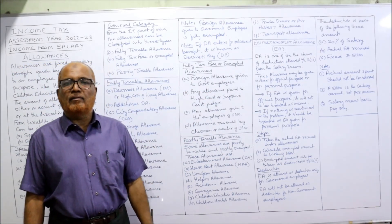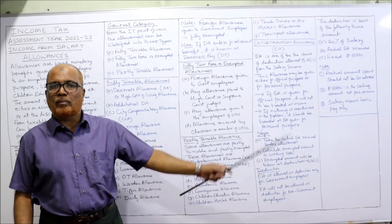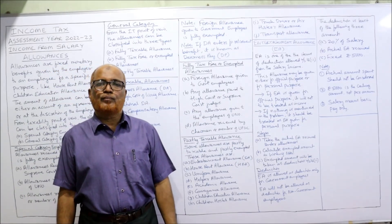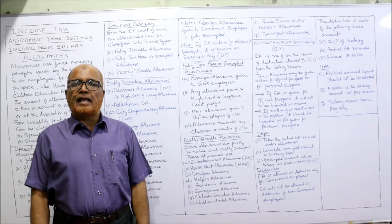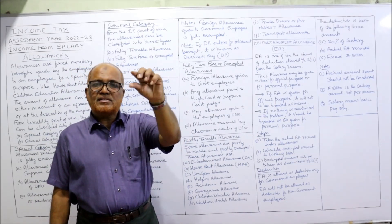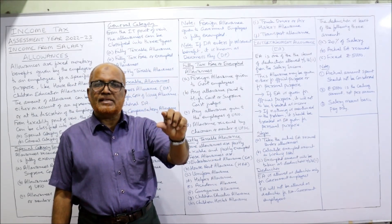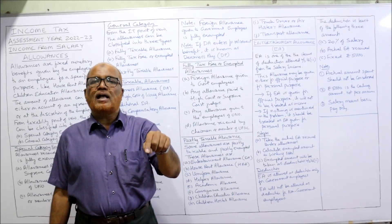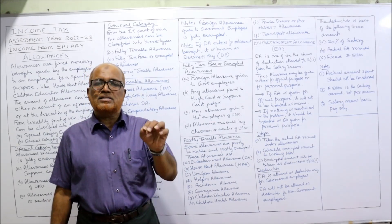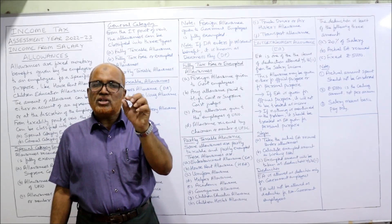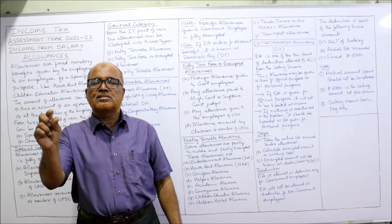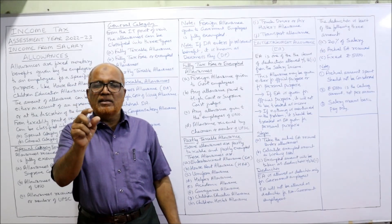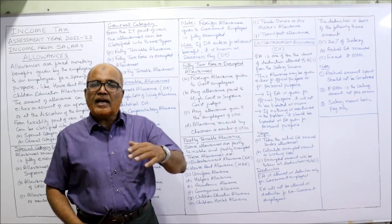Entertainment allowance (EA) is one of the items of deduction under Section 16(2) of the Income Tax Act. While computing income from salary, we take four components: salary, allowances, perquisites, and profit in lieu of salary. Adding these gives gross salary income, from which deductions under Section 16 are allowed. One such deduction is under Section 16(2) — the EA deduction. Whatever EA is received should first be taken under allowances.